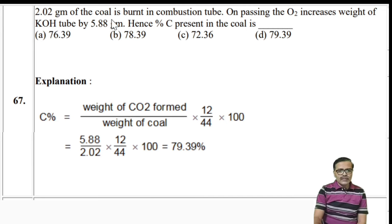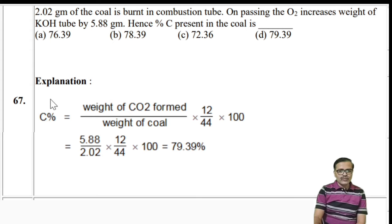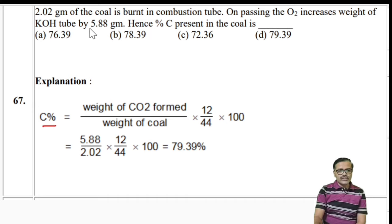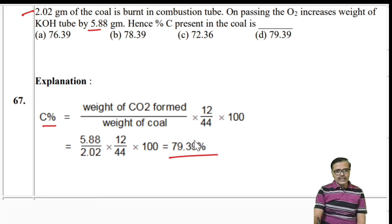Numerical: 2.02 g coal burnt in combustion tube; increase in weight of KOH U-tube (CO2 absorbed) = 5.88 g. Carbon% = (weight of CO2 / initial weight of coal) × (12/44) × 100 = (5.88/2.02) × (12/44) × 100 ≈ 79.39%. The answer is 79.39%.